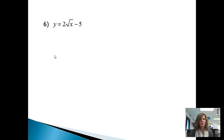Alright, let's try a new example. Let's say I have y equals 2 square root x minus 5. Before I take the derivative of this, I'm going to rewrite it. So let's rewrite it as 2x^(1/2) minus 5.